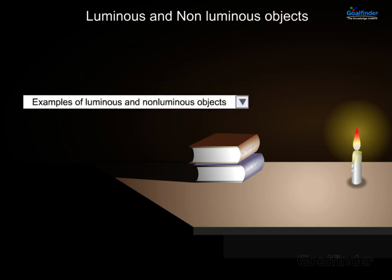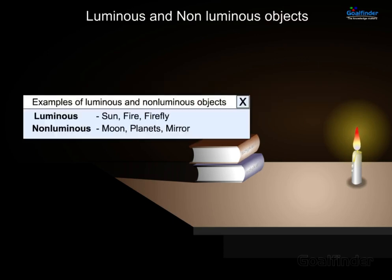Some examples of luminous objects are the sun, fire, and firefly. Non-luminous objects include the moon, planets, and mirror.